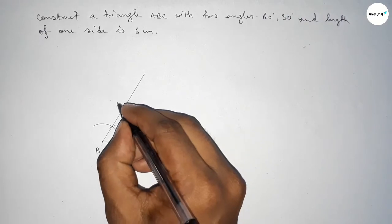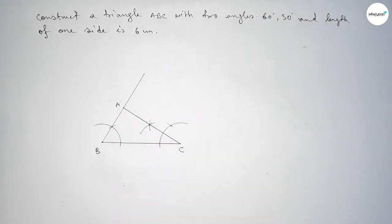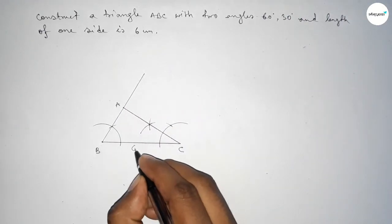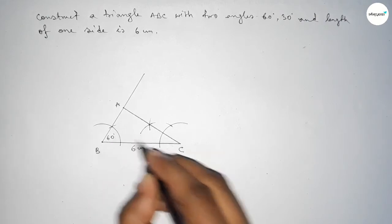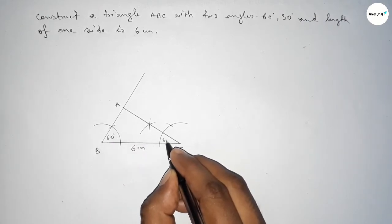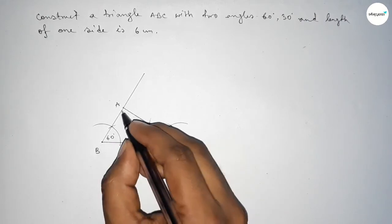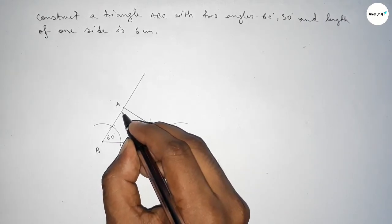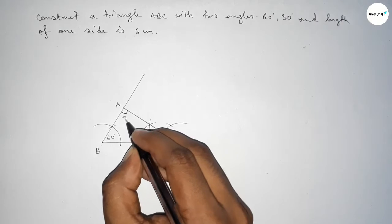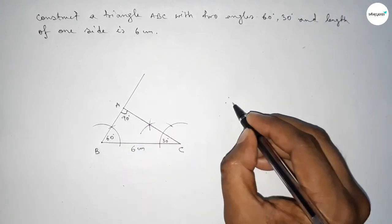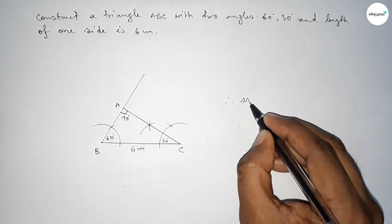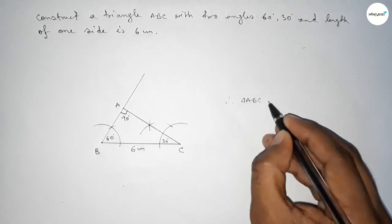Both lines intersect at point A. So this side is 6 centimeters, this angle is 60 degrees, this angle is 30 degrees, and this remaining angle is obviously 90 degrees. So this is a 90 degree angle.